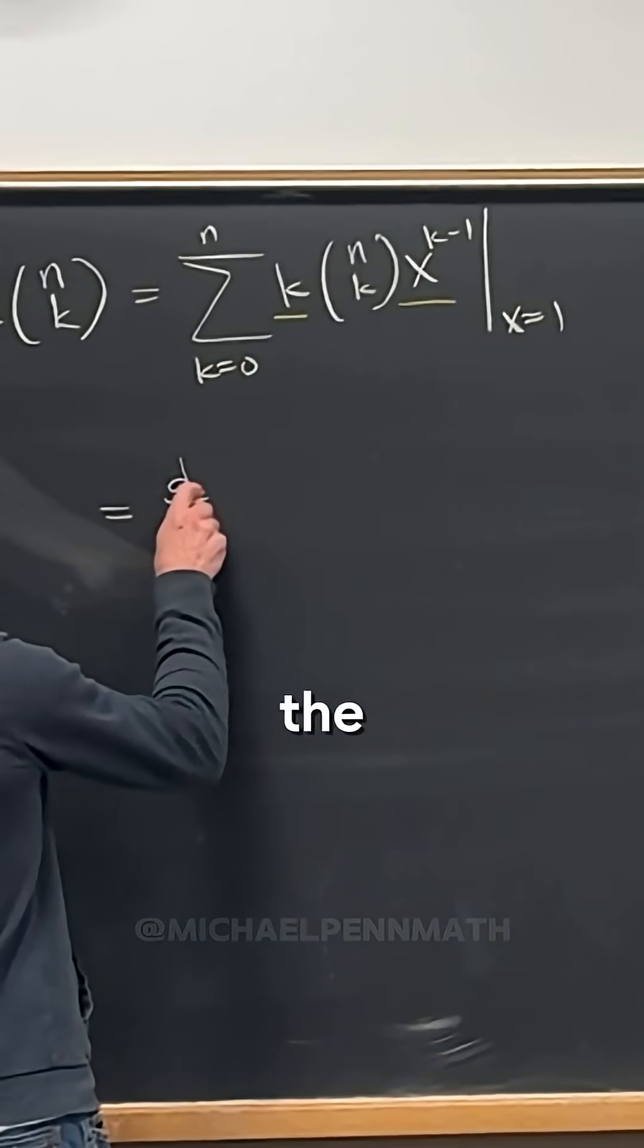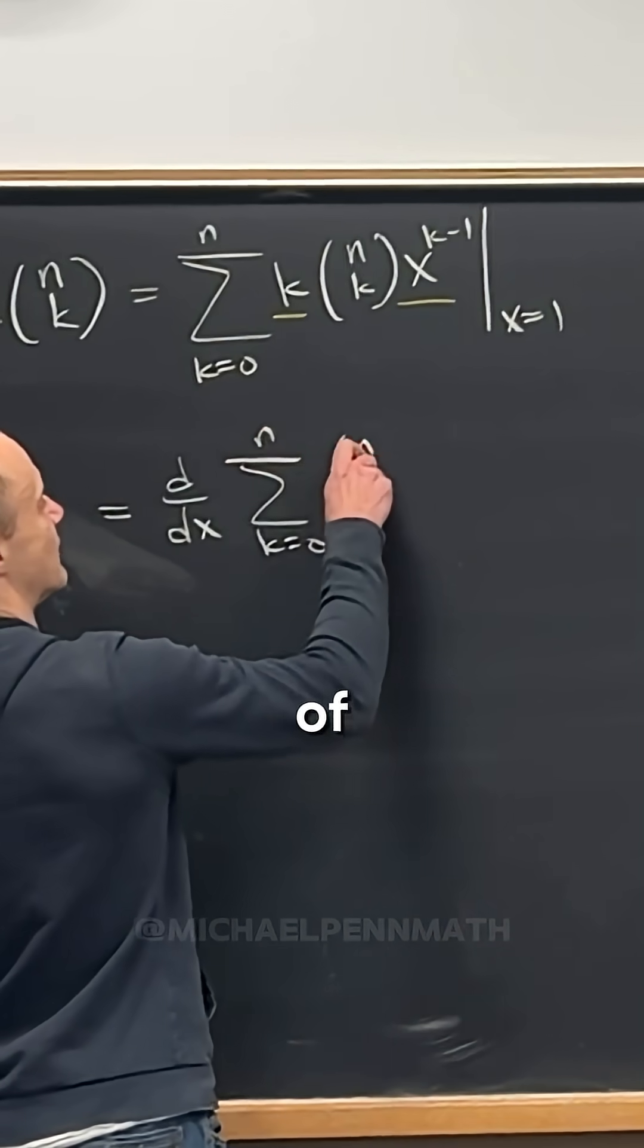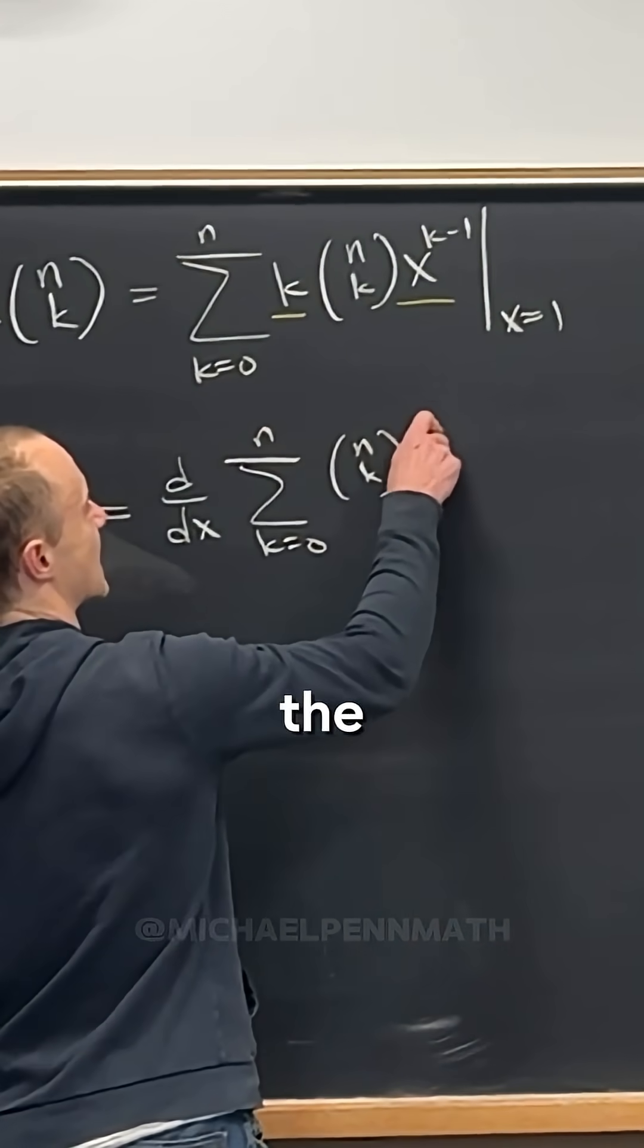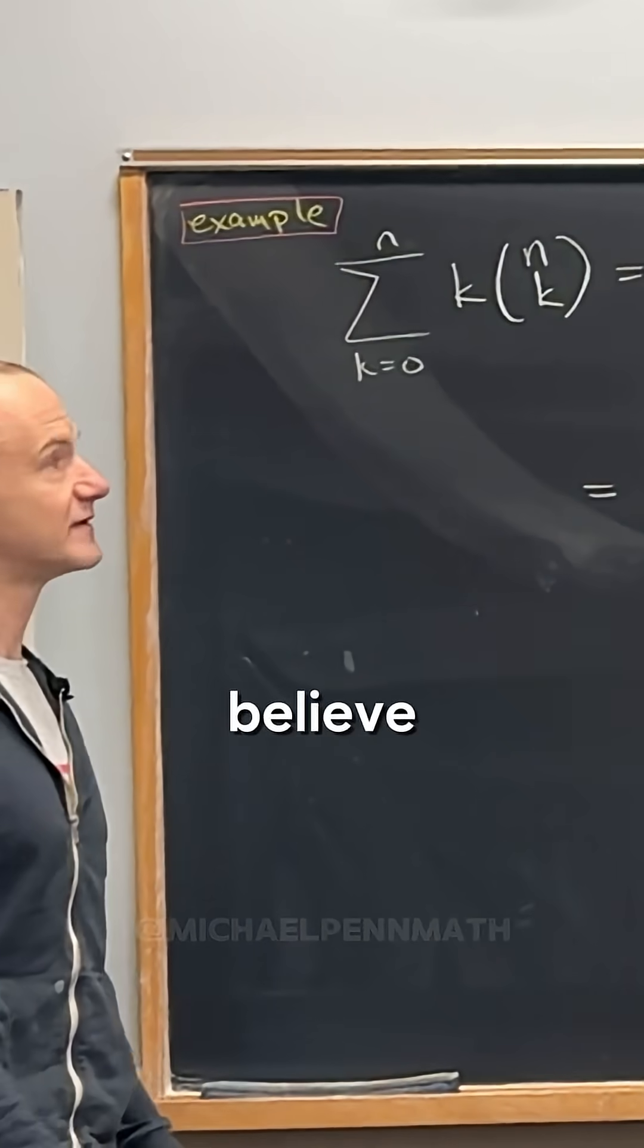So check it out. This is the derivative with respect to x of the sum, as k goes from 0 to n, of n choose k, x to the k evaluated at x equals 1. Do we believe that? Yeah.